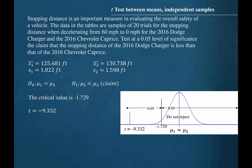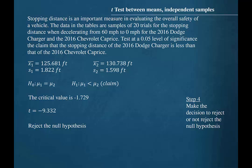But our calculated t-test value was negative 9.332. This clearly lies in the rejection region. So our decision should be to reject the null hypothesis.